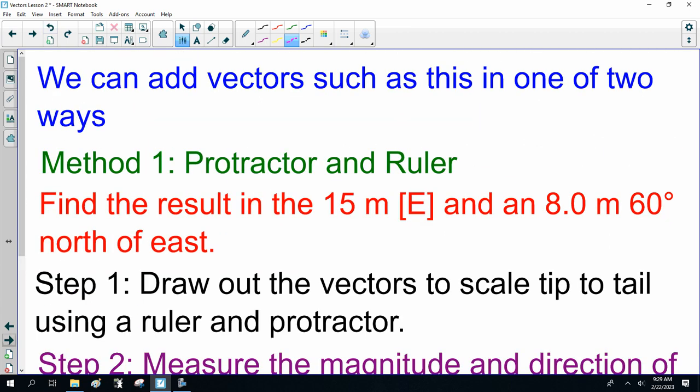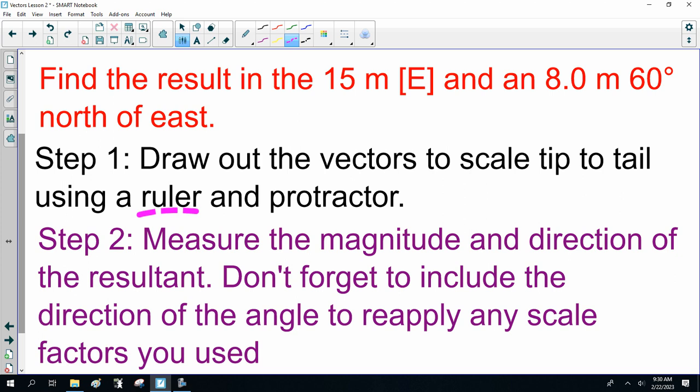We can add vectors such as this in one of two ways. The first method, Method 1, is a protractor and ruler. Find the resultant in 15 meters east and 8 meters 60 degrees north of east. Step 1, draw the vectors to scale using a ruler and protractor. Step 2, measure the magnitude and direction of the resultant. Don't forget to include the direction and the angle, and reapply any scale factors you used.